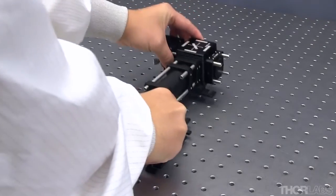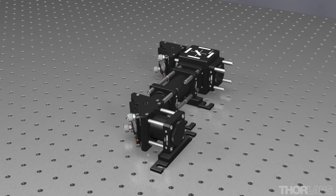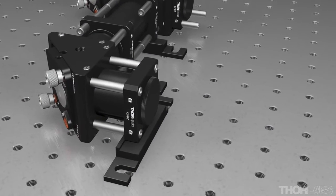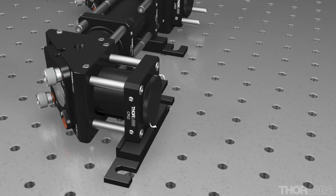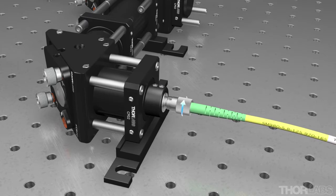Place the beam expander module on the table. Remove the end cap and install the collimator mount and fiber collimator. Connect the other end of the fiber patch cable to the beam expander section as shown here.